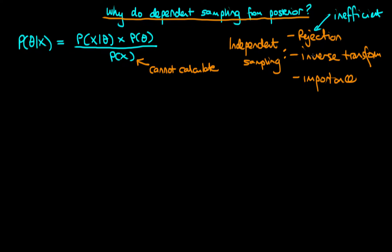Looking at inverse transform sampling, the problem is that firstly we need a normalized probability distribution, and also crucially we need a cumulative density function which we normally cannot calculate, especially if the density is unnormalized. Lastly, importance sampling isn't useful typically in Bayesian inference because it's hard to choose appropriate importance distributions. The variance of your estimates depends crucially on getting the choice of your importance distribution right, and with an arbitrary importance distribution the variance of your estimators would be extremely high and not useful in practice.